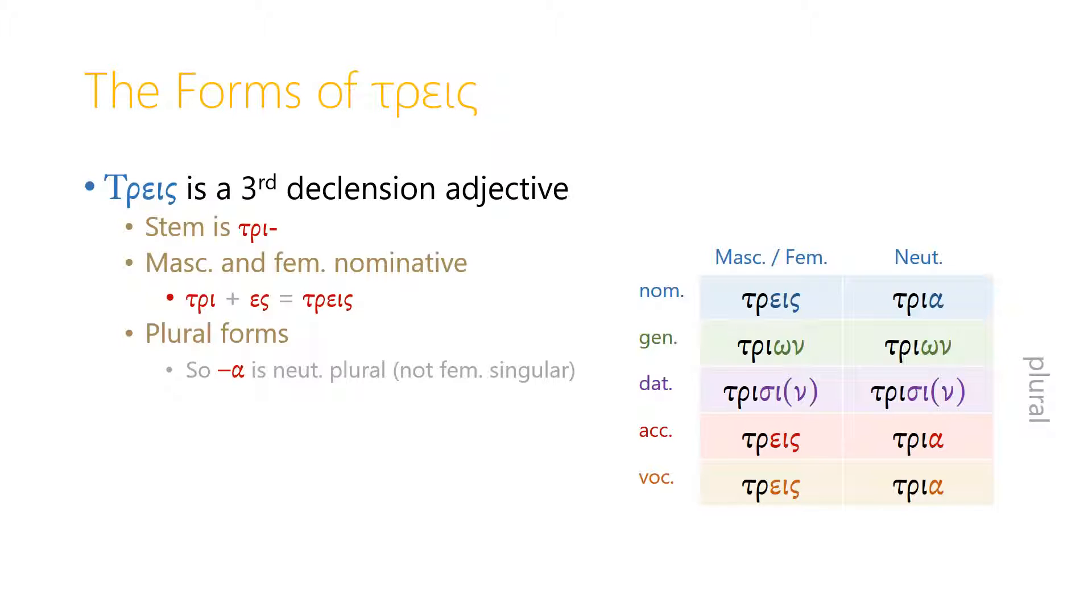In the neuter, the difference is simply that the nominative plural neuter form uses the typical alpha ending, so tria, and as usual the accusative and the vocative of the neuter plural are the same as the nominative. So tria is the nominative, tria is also the accusative, and tria is also the vocative. But the forms trion and trisin are the same across all three genders.